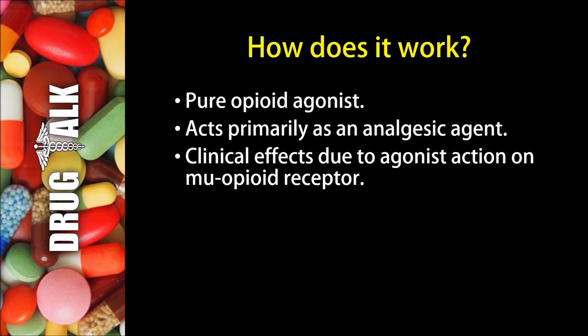So how does hydromorphone work? Well, first of all, it's a pure opioid agonist. It acts primarily as an analgesic agent, or a medication used to treat pain. Its clinical effects are due to agonist action at the mu opioid receptor.